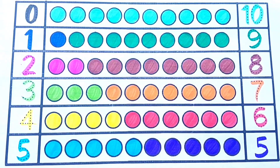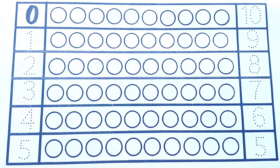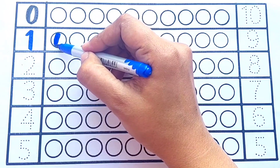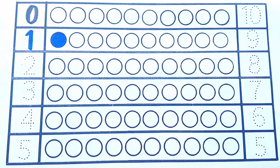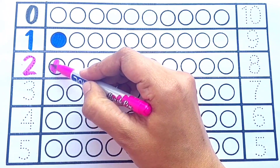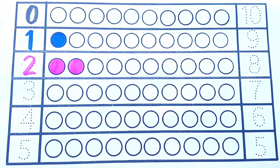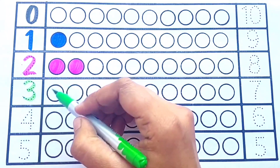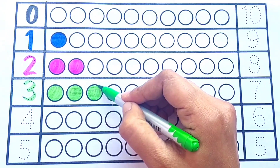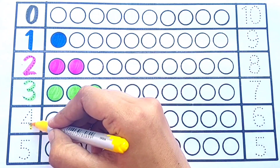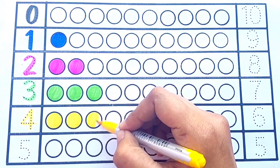Hello kids, let's learn 1 to 10. Black color: 0. Blue color: 1. 1 circle. Pink color: 2. 1, 2. 2 circles. Light green color: 3. 1, 2, 3. 3 circles. Yellow color: 4. 1, 2, 3, 4.